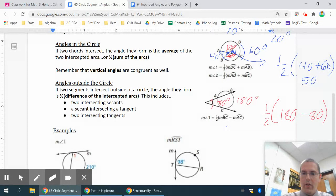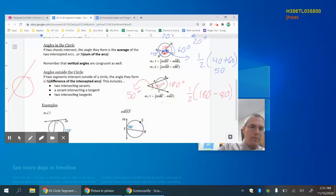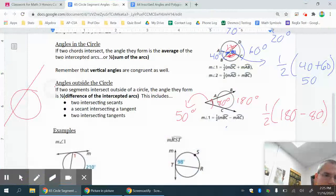And that would also give me a value of 50 degrees for angle 1 there. You don't always get an answer of 50, I'm just making up numbers that happen to be 50 today. And I do just want to mention that that is a situation where you have a secant and a tangent, but it works exactly the same if you have a situation like this where you have two secants.